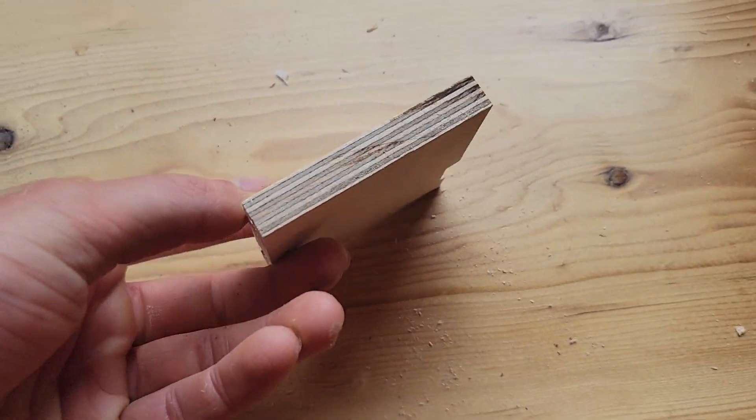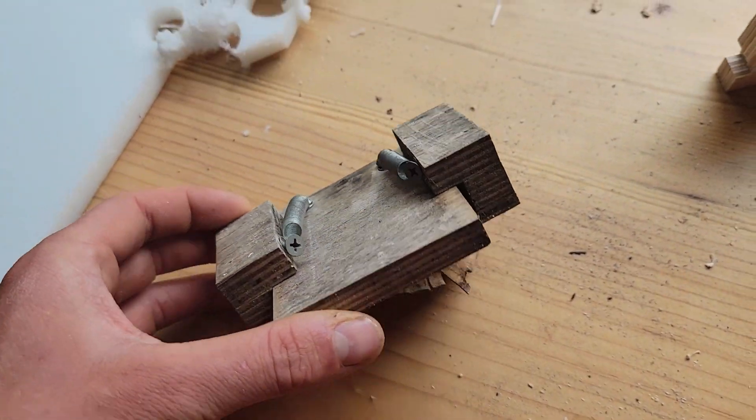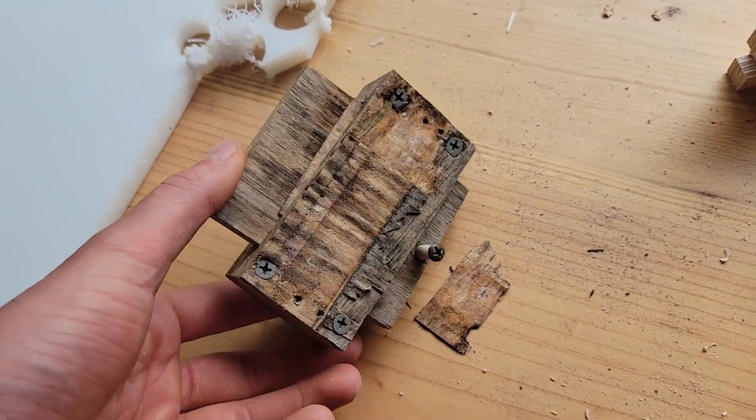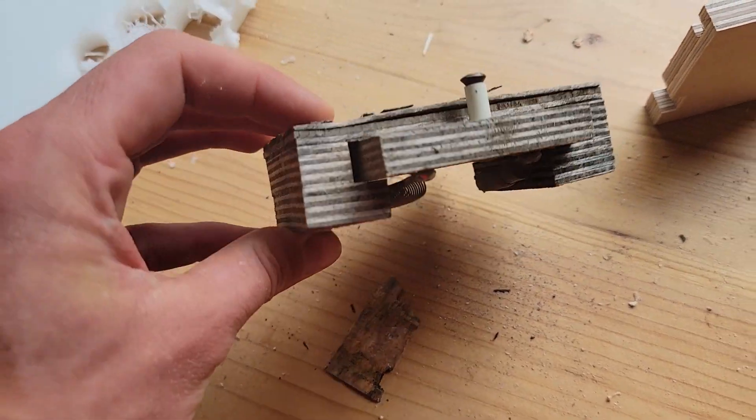So here's what the plywood looks like undecayed and here is the plywood handle which sat out in the rain and weather for about three winters.